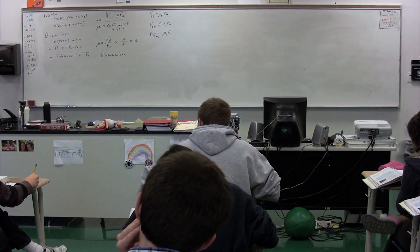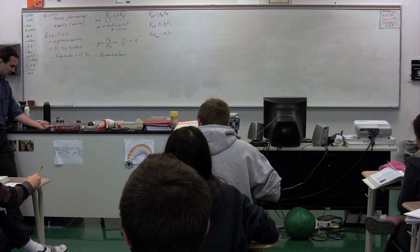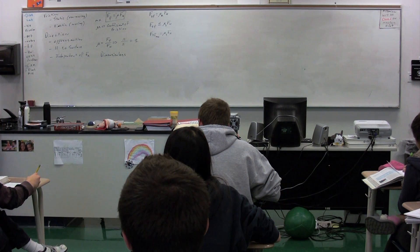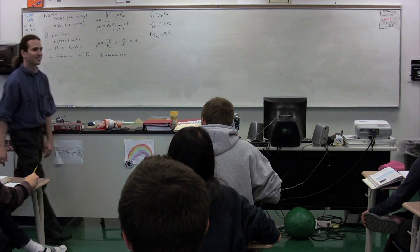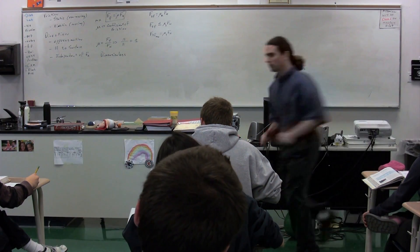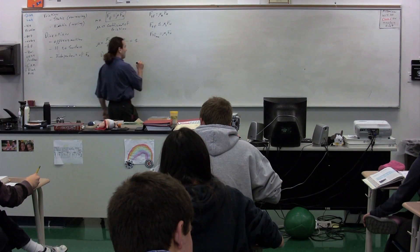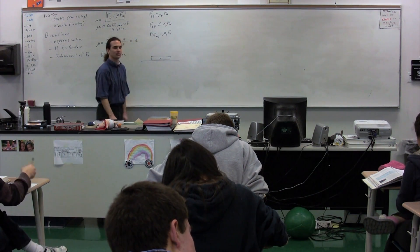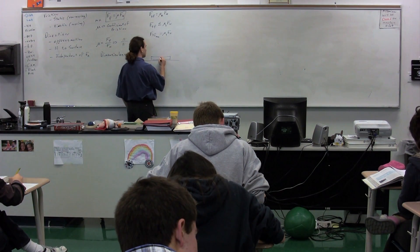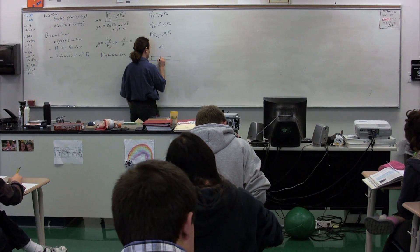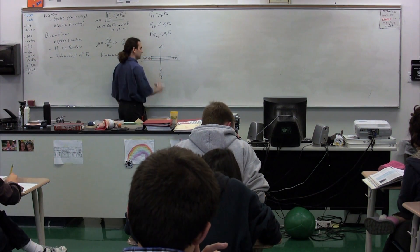To understand the less-than-or-equal sign, we'll start with a free body diagram. We have the dictionary in front. Let's draw the free body diagram for all forces acting on it. The forces are: force of gravity going down, force normal going up, force applied going to the right, and force of friction going to the left. What kind of friction? Static. How do you know? Because it's not moving.